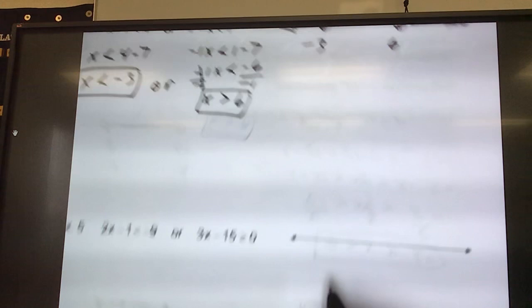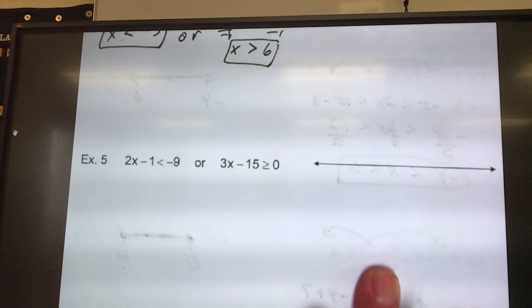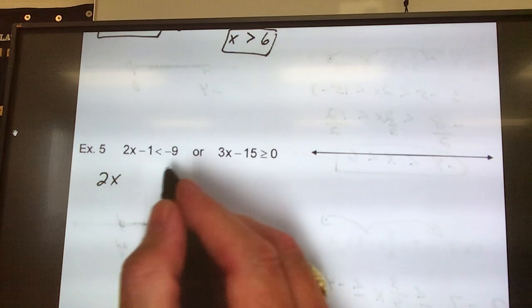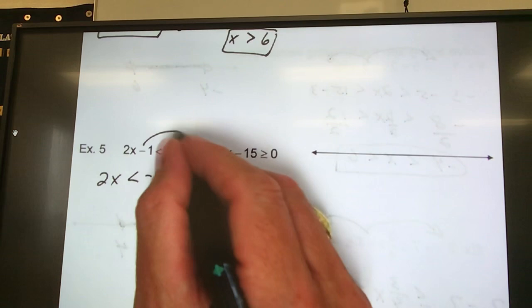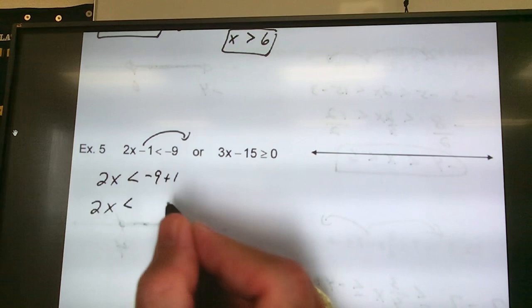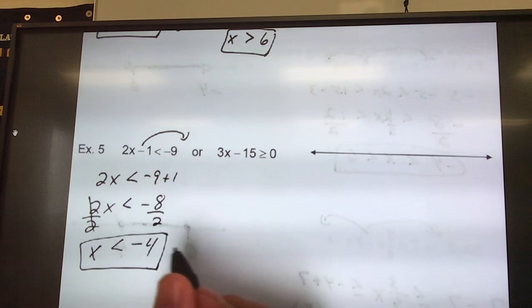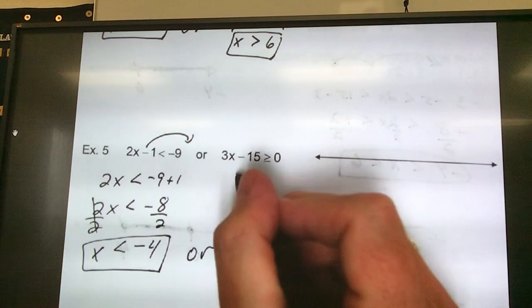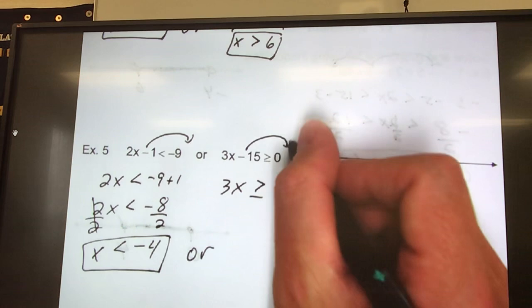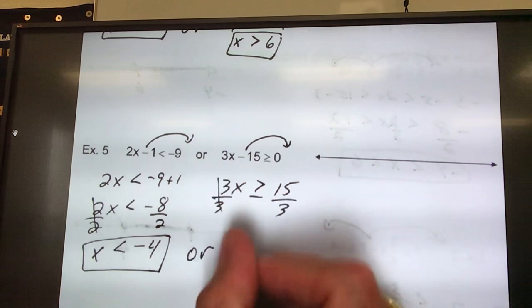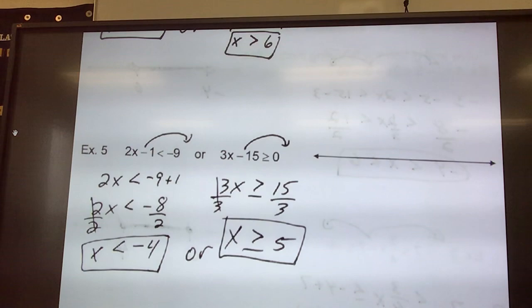Moving on to the next one, number 5. 2x is already on the correct side. So, I put down my 2x. There are no more x's. So, I closed the bridge. There was a negative 9 waiting for me. Took the negative 1 across. It became a positive 1. So, 2x less than negative 9 plus 1 is negative 8. Divide by 2 to get rid of that 2. x is less than negative 4. Box that in. Notice I didn't flip the sign because I divided by a positive number. Or, on this side, I have 3x greater than or equal to. Take the negative 15 across. Positive 15. Divide by 3. x is greater than or equal to 5.